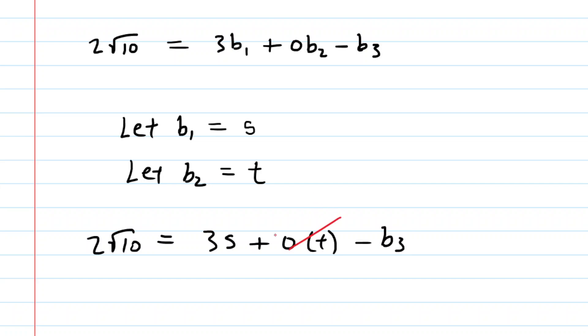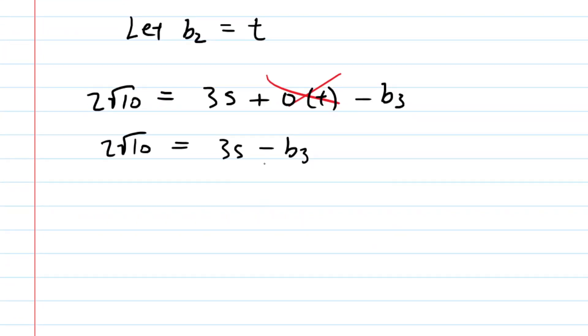Of course, the middle term zeros out. This leaves us with 2 square root 10 is equal to 3S minus B3. We're going to solve this for B3. We could add the B3 to the other side and then subtract the 2 radical 10 from both sides, and we end up with this for B3.